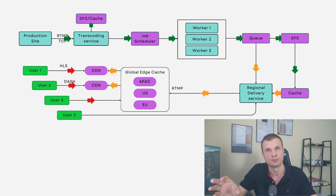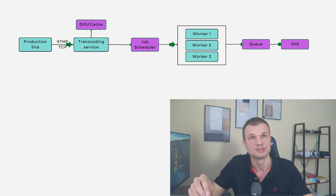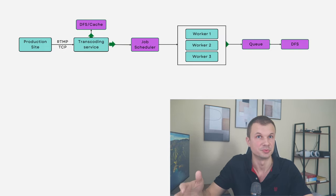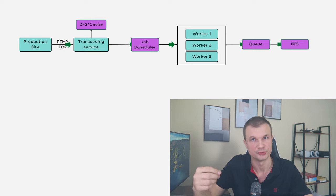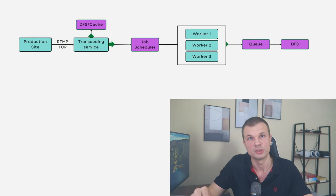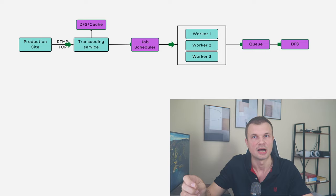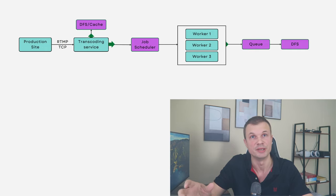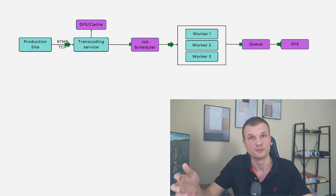We're going to start with the overall system design and high-level representation of the system. As you can see on this diagram it combines two components: data ingestion at the top and data delivery at the bottom. It all starts at the top left corner where we have a production site — the video is recorded in real time there, whether it's a soccer game or your laptop. We use RTMP protocol, which is TCP-based and very reliable, to stream the video to a remote data center where it will be transcoded.